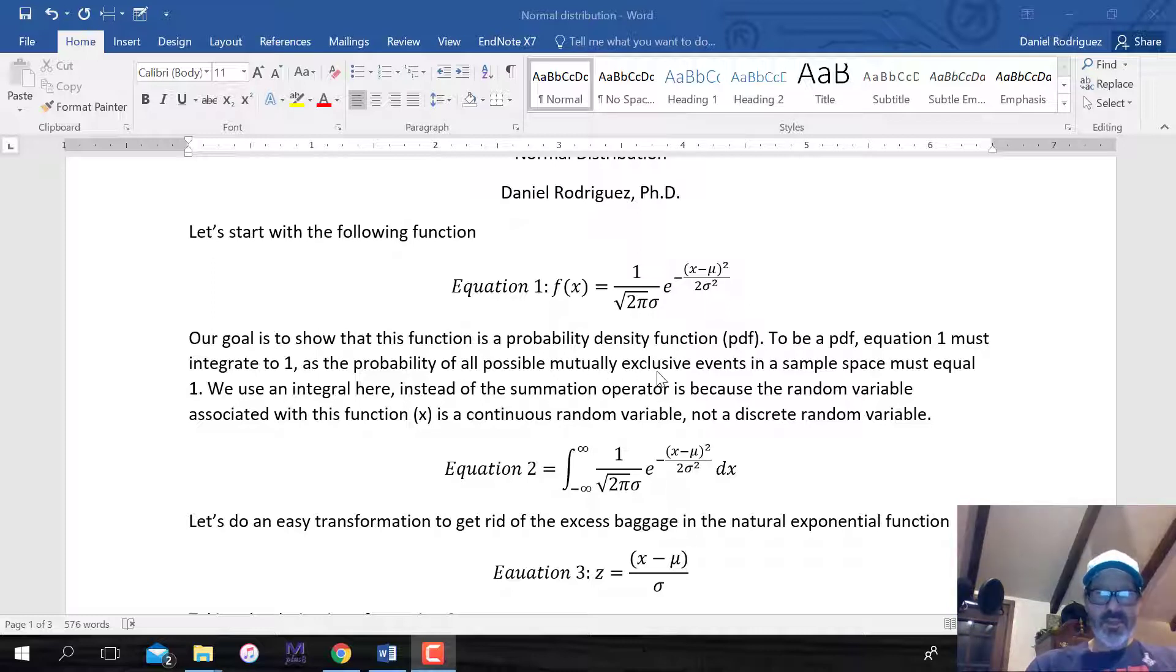We're just going to prove that this is a probability density function. One thing we know from probability theory is that in order to be considered a probability density function, if we summate across all values of the function with all mutually exclusive events, because in any sample space you have any number of events. Like, for instance, in flipping a coin, there's only two possible events, heads or tails. The probability of those events, since they're mutually exclusive, they cannot occur together, must equal one.